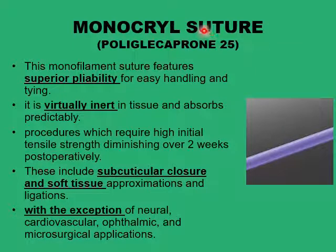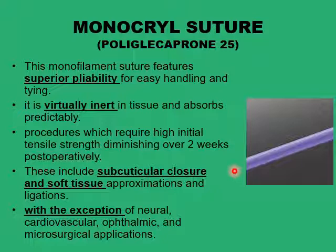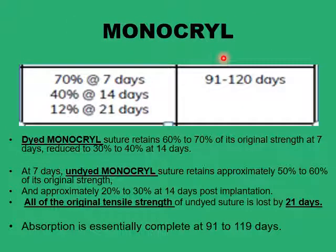Monocryl is another synthetic absorbable suture developed to offer superior pliability. It handles very well and ties beautifully. It's also virtually inert and absorbs and loses its tensile strength in a very predictable form. It retains its tensile strength for a little bit shorter than Vicryl and can be used in subcuticular tissue closures and soft tissue approximation that does not require long-term support. It's available in two forms. The dyed Monocryl stays a little bit longer in the tissues, retaining 70% of its strength for a week, 40% for two weeks, and 12% for three weeks, and stays in the tissues for between three and four months.